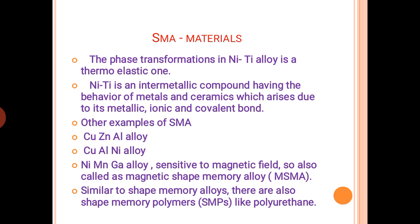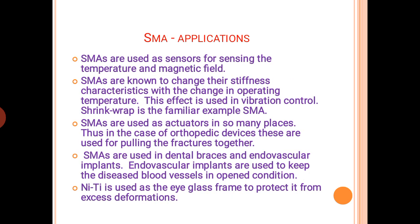Other examples of SMA materials include copper-zinc-aluminum alloy, copper-aluminum-nickel alloy, and nickel-manganese-gallium alloy, which is sensitive to magnetic fields and is therefore also called a magnetic shape memory alloy. Similarly, some polymers are shape memory in nature — for example, polyurethane is a shape memory polymer.